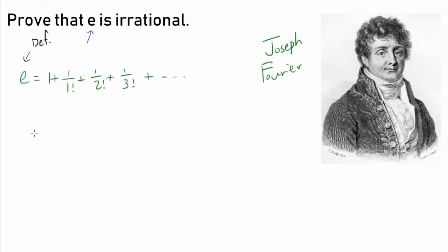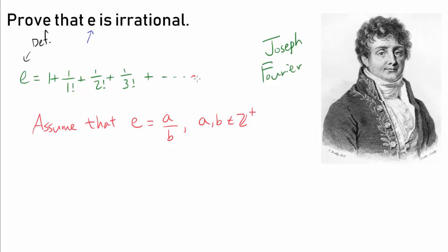To start the proof, it is going to be a proof by contradiction. So we are going to assume that E is rational, or E can be written as A over B, such that A and B are positive integers. We know they can be positive because we can show that E is around 2.71828, so this series converges to an obviously positive value.